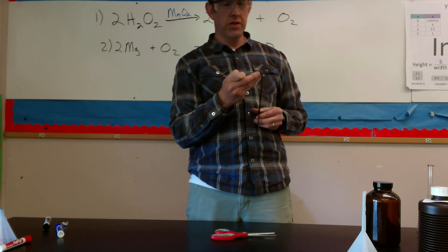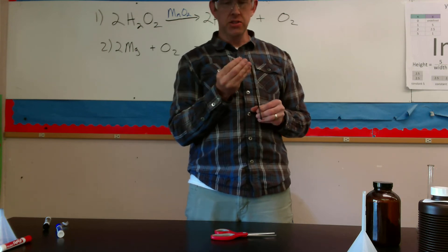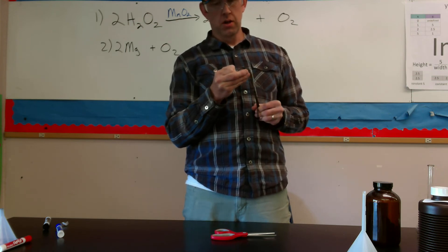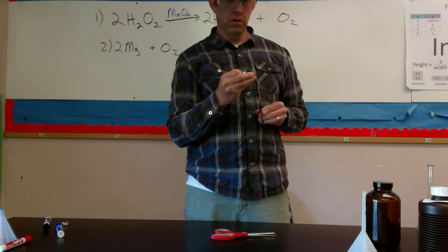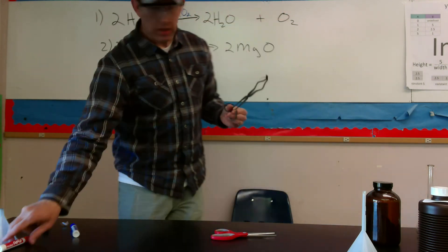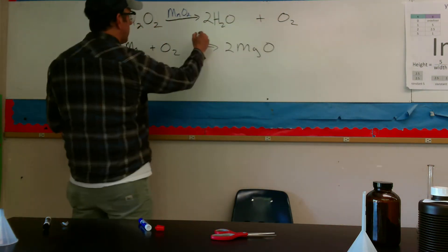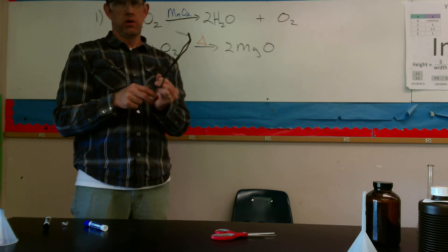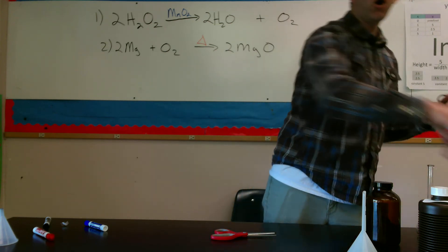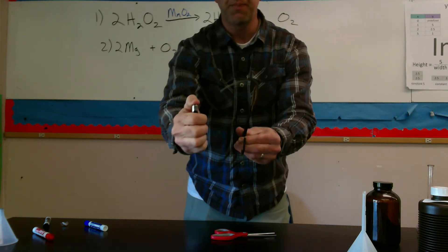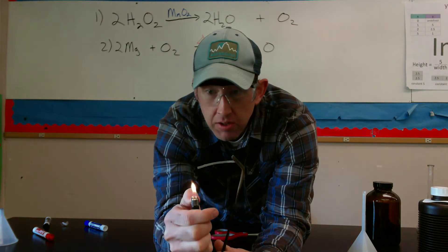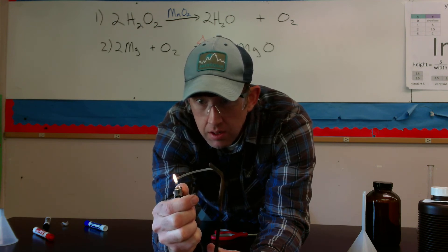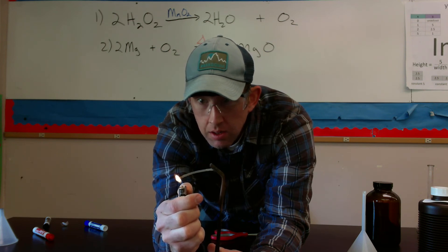By adding some heat to this system, we represent heat in a reaction by adding a little triangle above the arrow. Heat often helps a reaction occur more quickly. I'm going to add some heat just by using a basic little lighter here. Keep this a little bit close, might take a second to generate enough heat there. There we go.